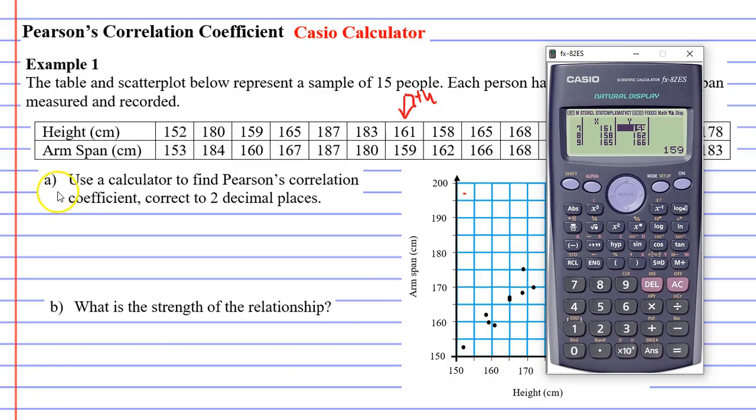We're going to look at question A now. It says use a calculator to find Pearson's correlation coefficient correct to two decimal places. So the first thing I'm going to do is I'm going to get out of the screen. I'm going to click AC.